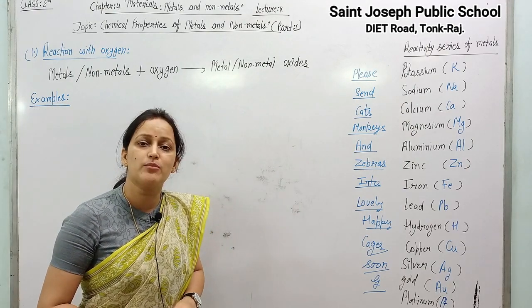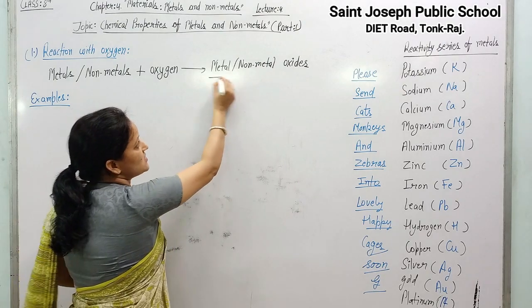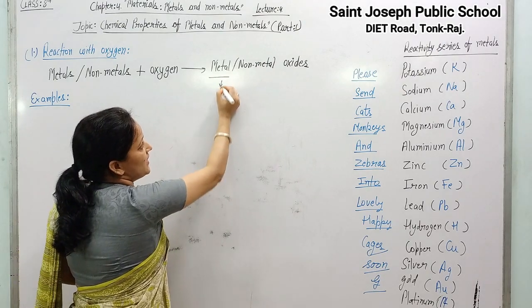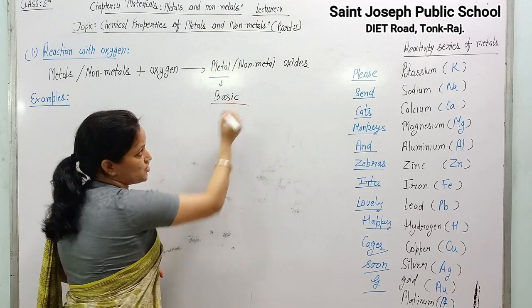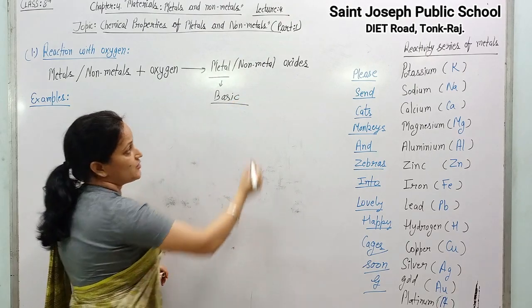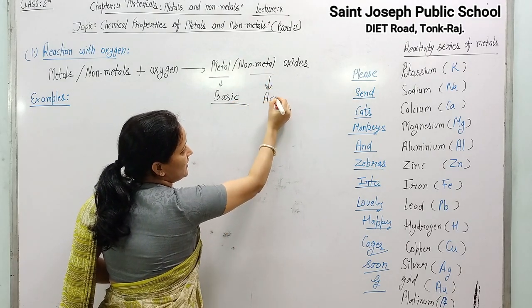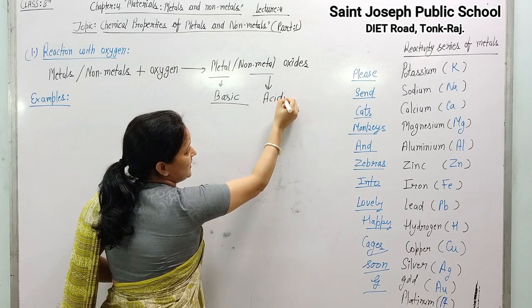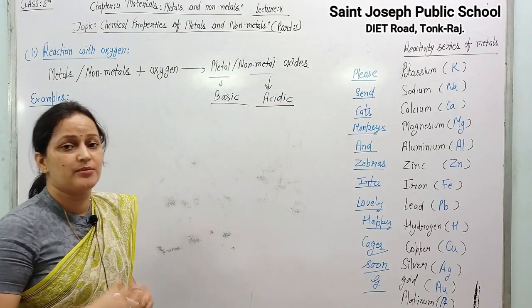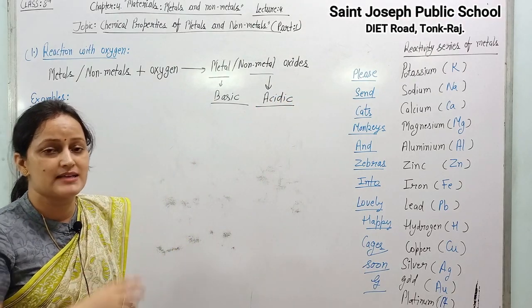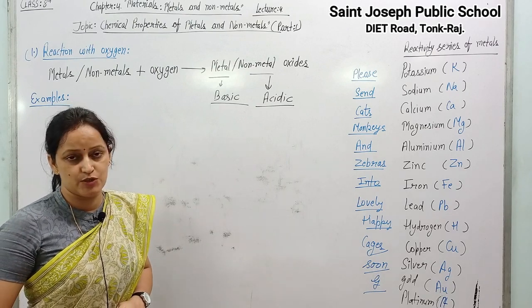Remember one more thing: metal oxides are generally basic in nature, and non-metal oxides are generally acidic in nature. We are going to prove their basic and acidic properties also in the later section.